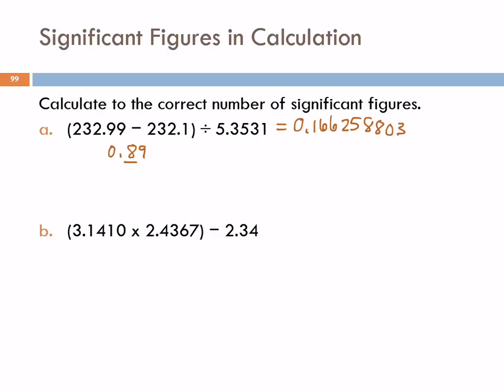I'm going to leave the second decimal place there because I don't want to introduce rounding errors. Now, when I look at this number, how many significant figures are in that whole number? Just one — the eight. That underlined digit is the last significant figure. The nine is not a significant figure.